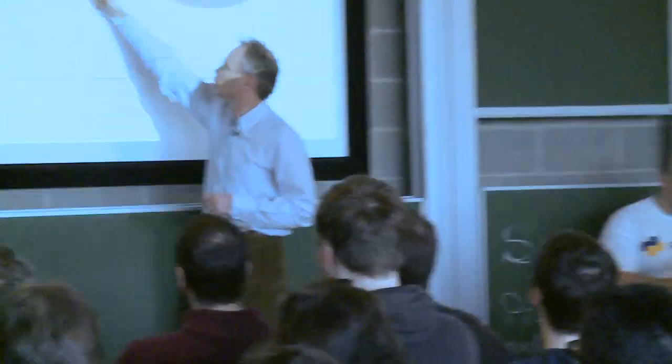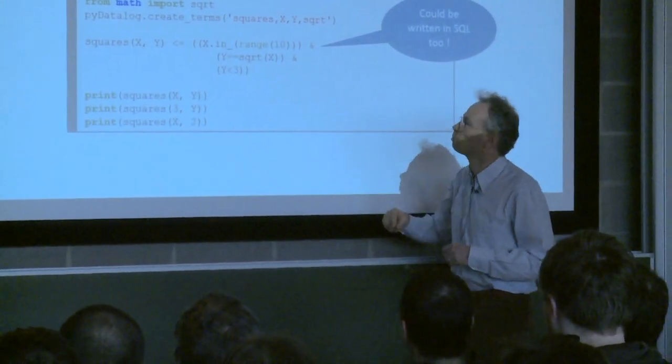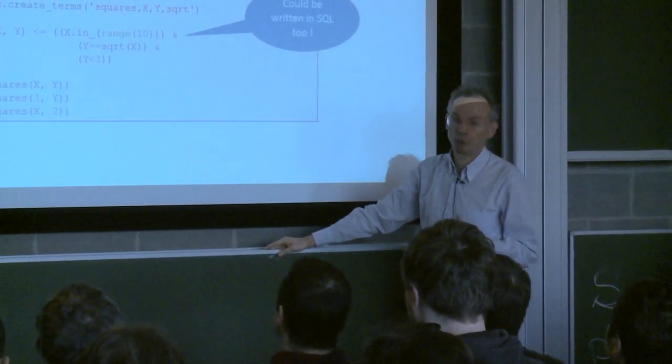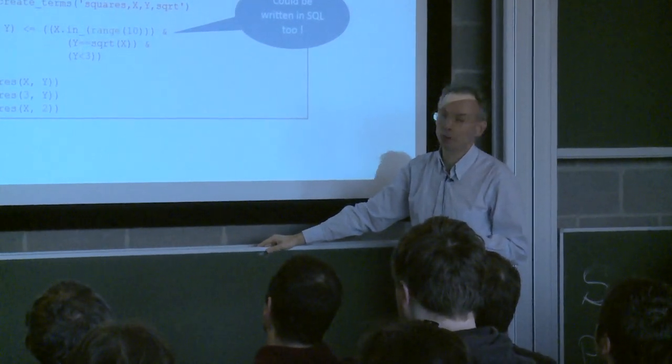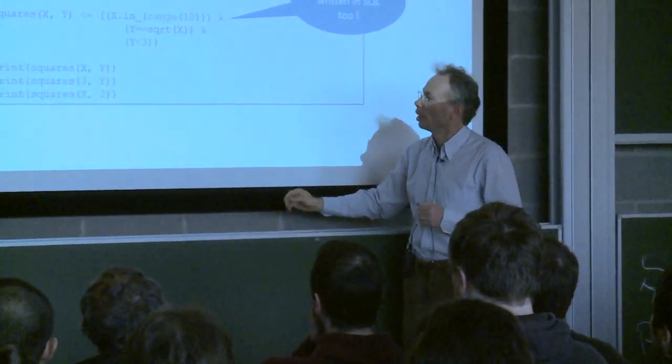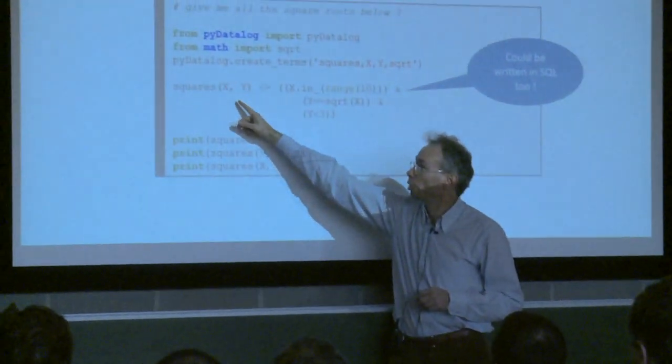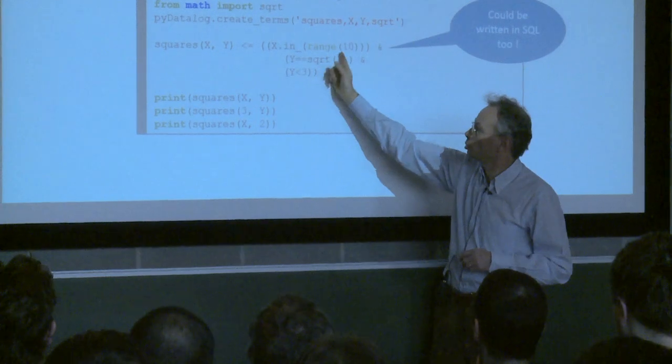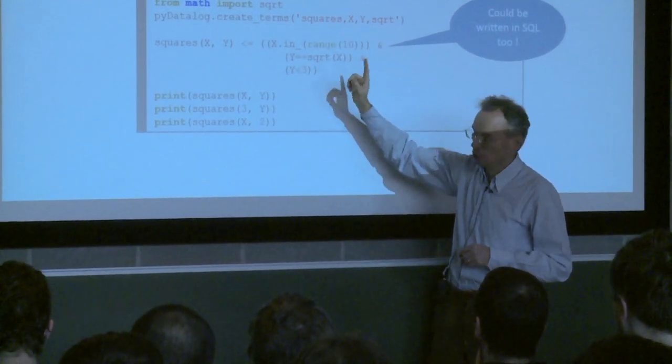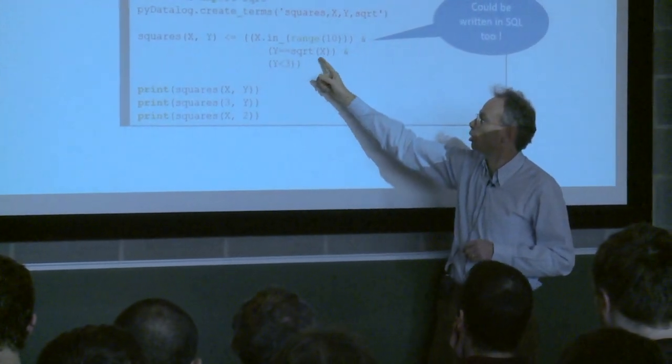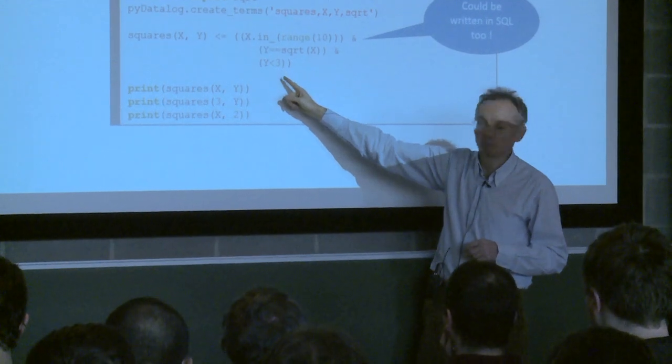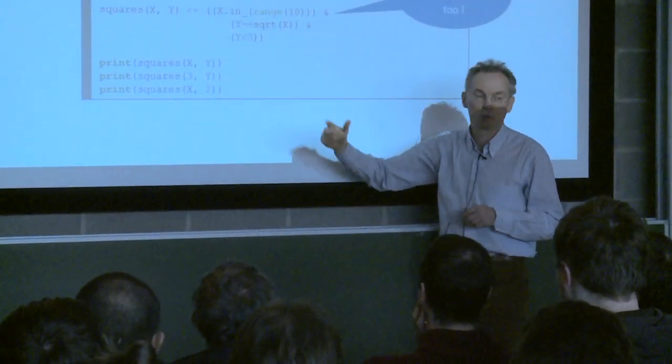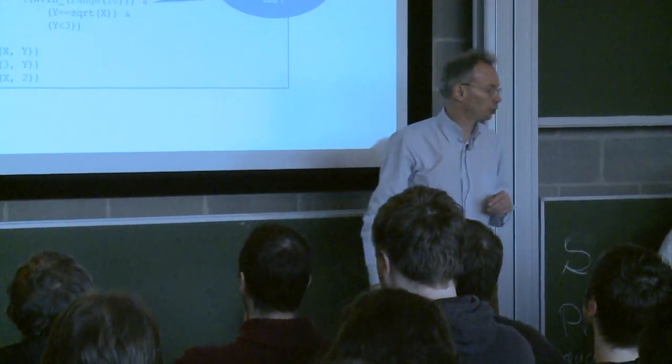So here is some sample. So here I put the quotes, there should be some quotes like this on the previous slide. Let's give some examples. This is a program to give you all the square roots of integers that are below 3. And this is the actual program there, the squares of x and y is true if x is in the range 1 to 10, 0 to 10, so sorry, 0 to 9, y is the square root of x and y is below 3.